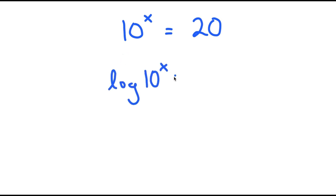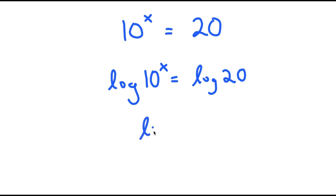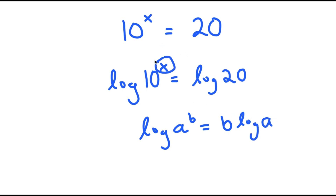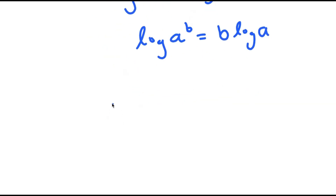So I get log of 10 to the power of x is equal to log of 20. If I have something in the form log of a to the power of b, this is equal to b times log a. So I can move x to the front, and I get x times log 10 is equal to log 20.